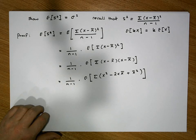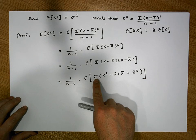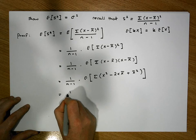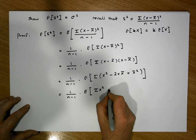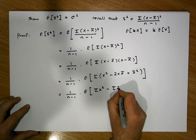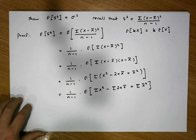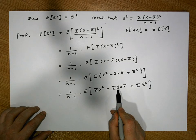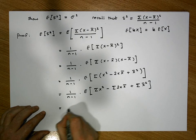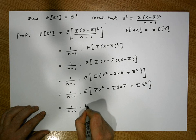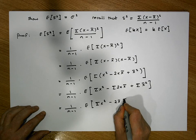We need to calculate this expectation. The sum of these terms equals the sum of the individual terms, so this becomes 1 over (n minus 1) times the expected value of the sum of the x squared terms, minus the sum of 2x times x-bar, plus the summation of the x-bar squared terms. Since x-bar is a constant with respect to the index, 2x-bar comes outside the summation, giving us the sum of the x terms multiplied by 2x-bar.